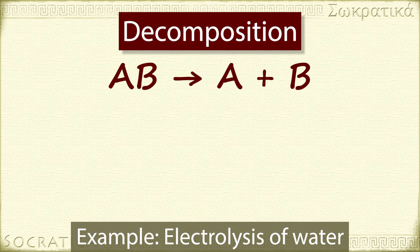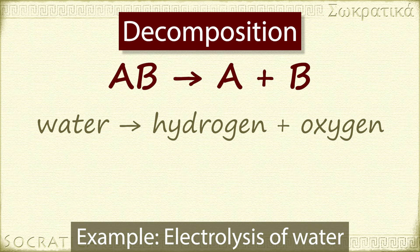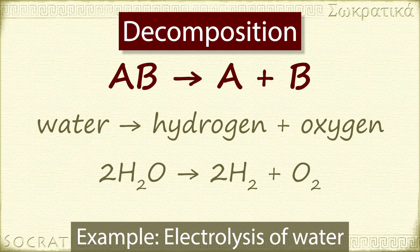An example of a decomposition reaction is the electrolysis of water to form hydrogen gas and oxygen gas. The word electrolysis should remind you that it takes energy in the form of electricity to slice or cut the water into its components. The balanced chemical equation is 2H2O yields 2H2 plus O2.